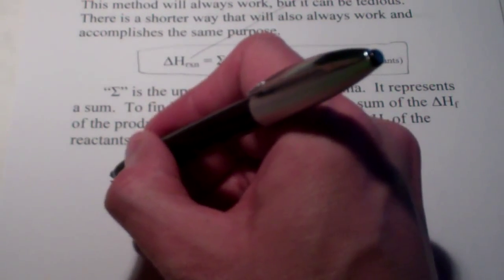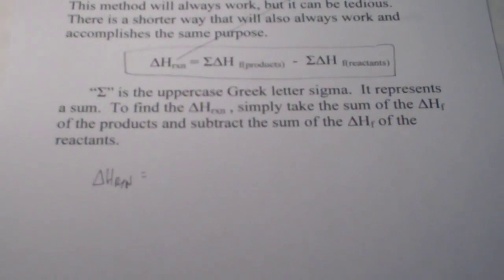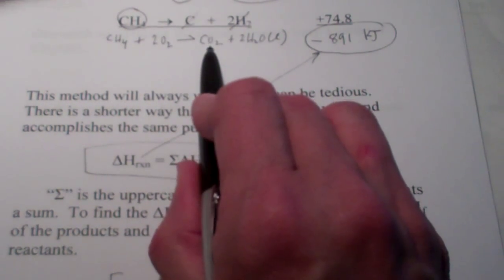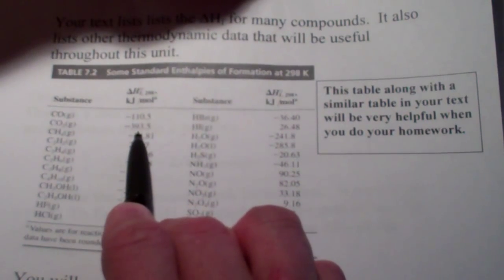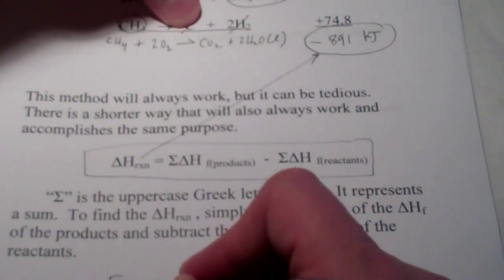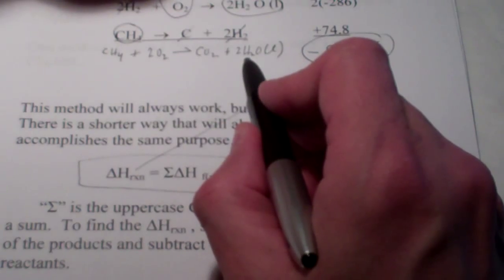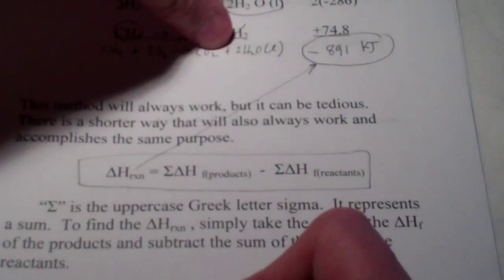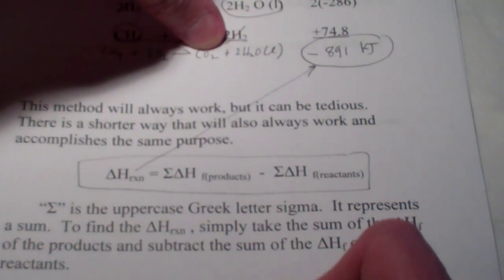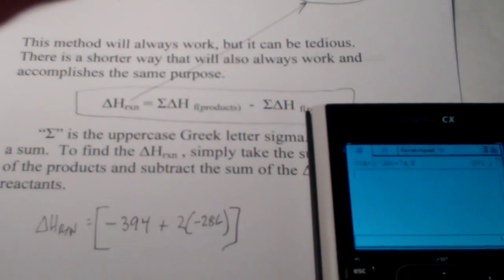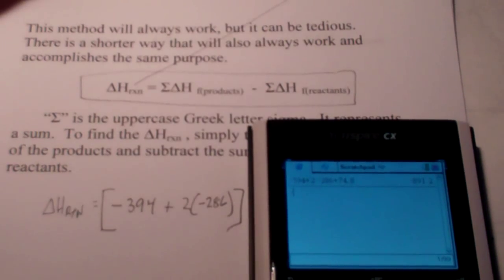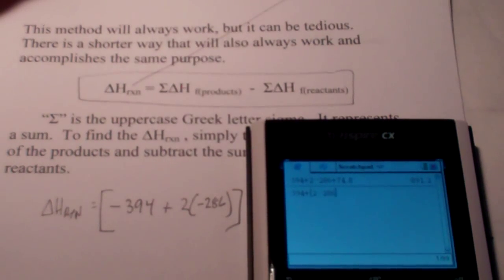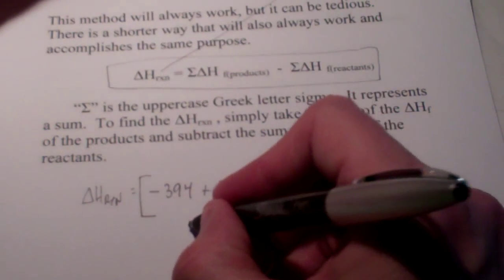Let's find the heat of the same reaction using the alternate version of Hess's Law. I take the heat of formation of my products: CO2 is 1, so the heat of formation of CO2 is negative 394. I add that to the heat of formation of my other product, 2 liquid waters — the heat of formation of each liquid water is negative 286, and since we make two of them, we double it. So: negative 394 plus 2 times negative 286. This side equals negative 966.